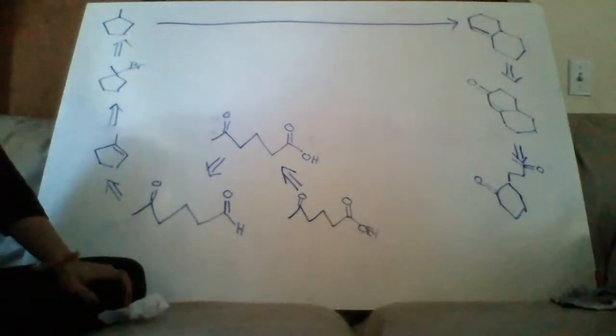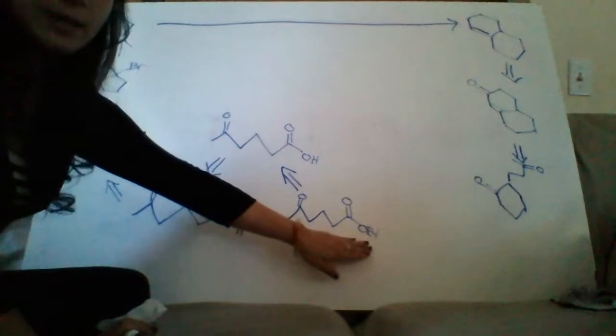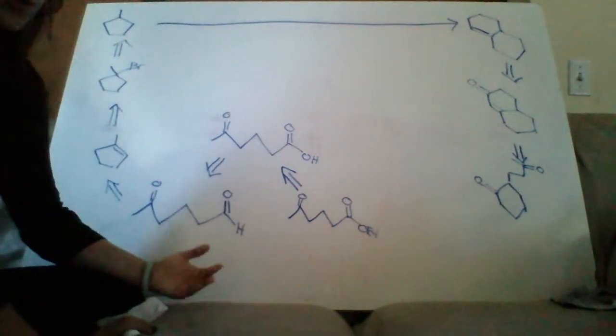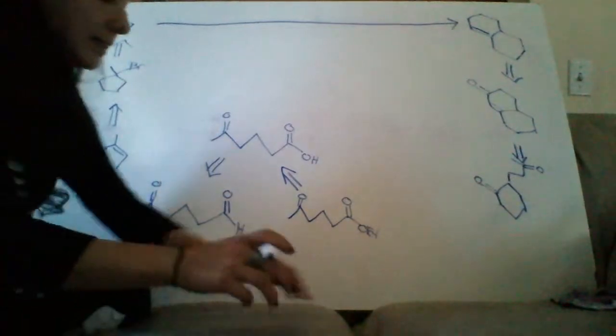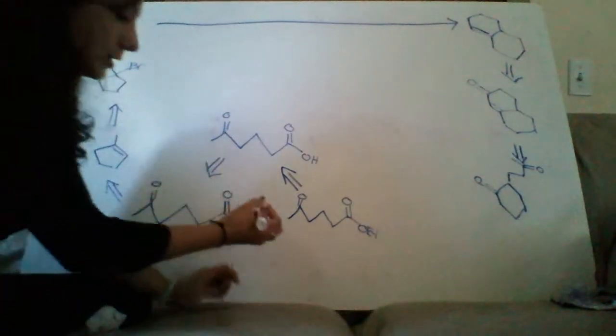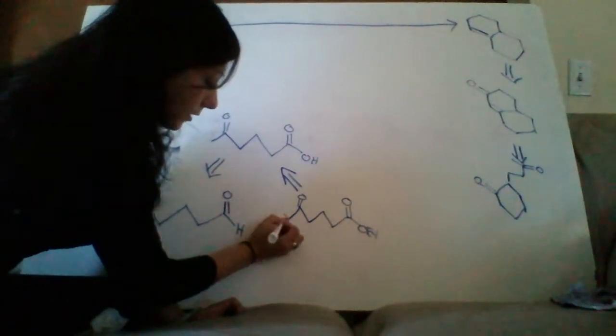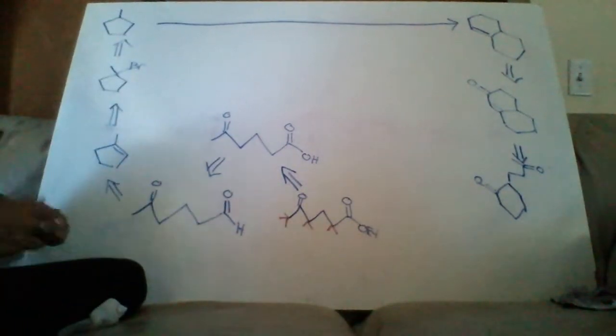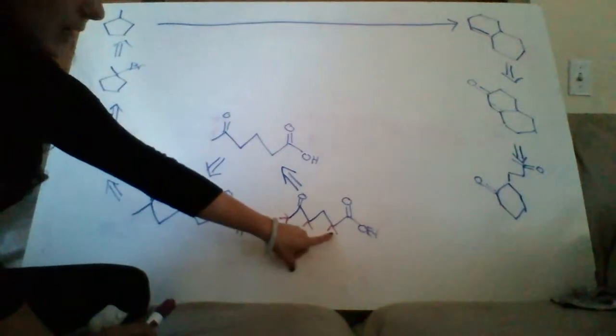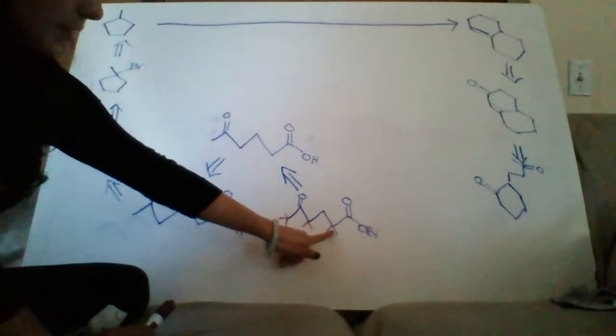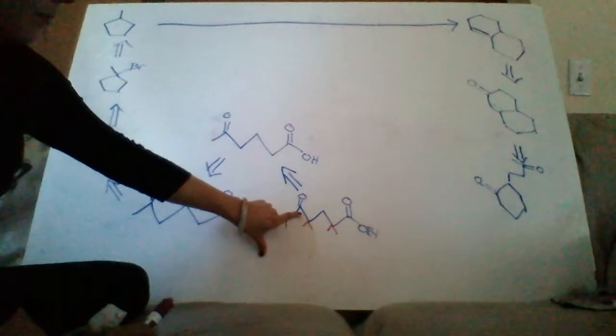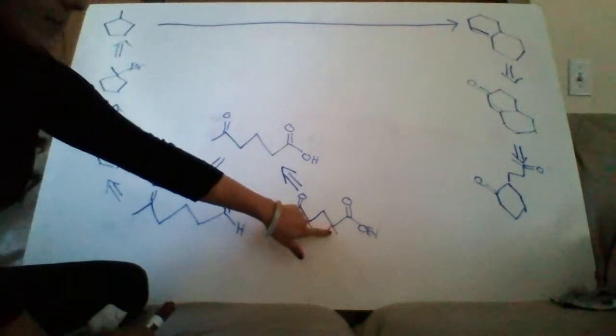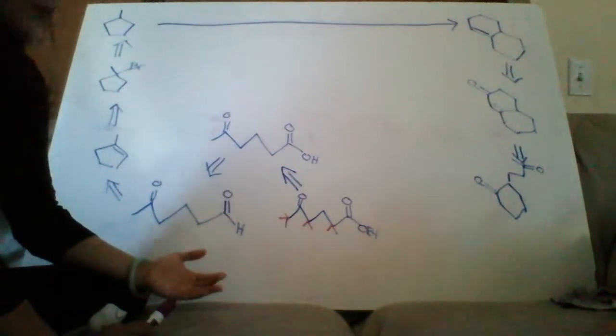If I add base to this now I can get rid of this leaving group but there's several alpha hydrogens that a base could remove. So let's take a look at the different alpha hydrogens I have. I have these three, I have these two, and I have these two. If I removed either of these alpha hydrogens this could attack this carbonyl but if it did it would form a one, two, three, four membered ring which wouldn't be very stable.